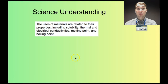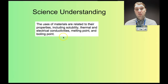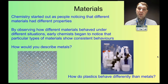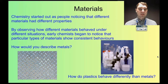The science understanding we're going to look at is: the uses of materials are related to their properties, including solubility, thermal and electrical conductivity, melting point and boiling point. We're going to look at a few other properties in addition to this list. The reason we're looking at materials and their properties is because a lot of chemistry is based around trying to design a material that meets particular properties — so why do we use particular materials and how do we use their properties to make particular things?